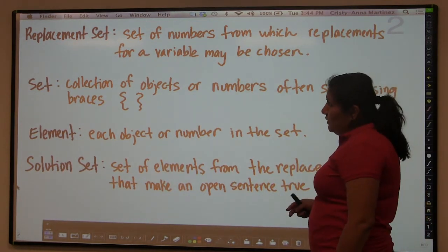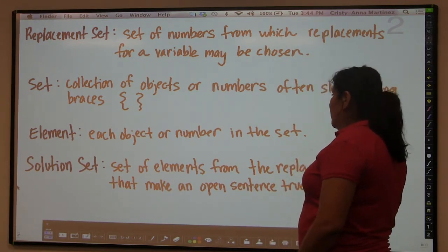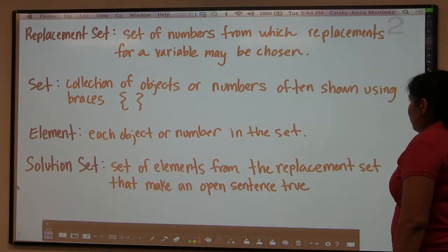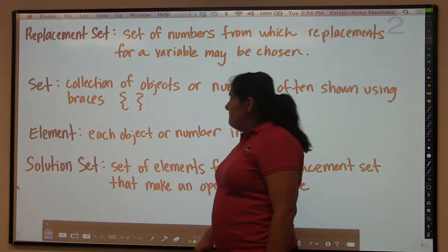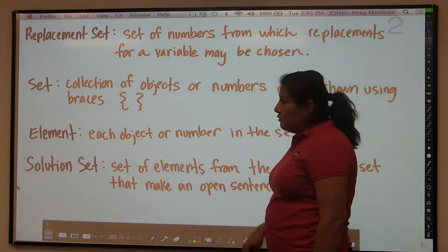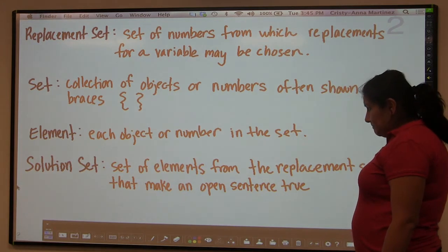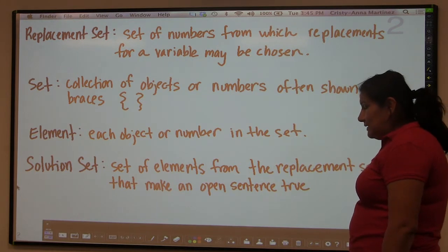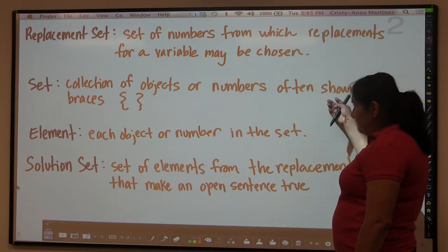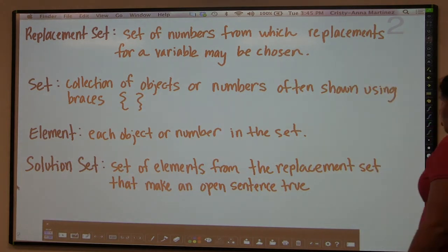You might be wondering, what is a set? A set can be any collection of objects or numbers, and it's often shown using braces — these bracket symbols. You'll be putting some of your answers in brackets like that. Each object or number that is in the set is considered an element. Then we have a solution set, which is the set of elements from the replacement set that make an open sentence true.